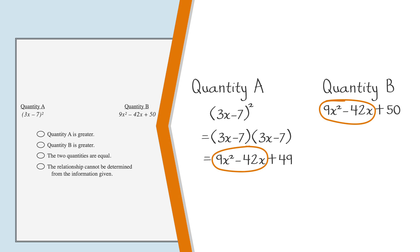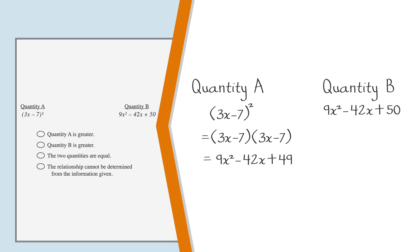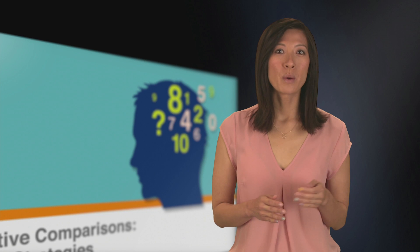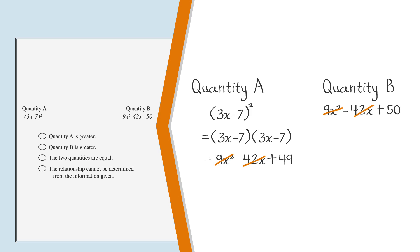We can cancel them to even it out by a process called adjusting both columns. So let's cross out 9x squared minus 42x. Remember, when you use the process of adjusting both columns, whatever you do to one column, you have to do to the other.